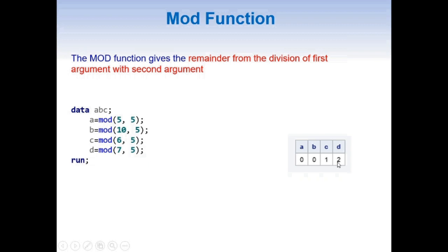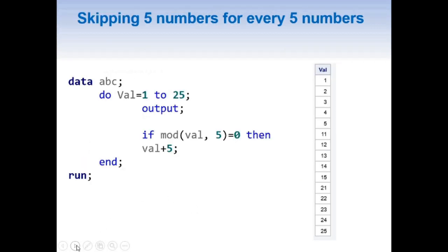By using this MOD function along with the DO loop, we can skip 5 numbers for every 5 numbers starting from 1. Here I have the following code: DO val equal to 1 to 25, OUTPUT, and I have added an IF statement wherein I have said: if MOD(val, 5) equal to 0, then val plus 5, and END.